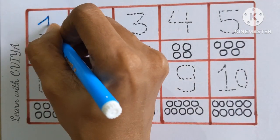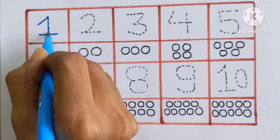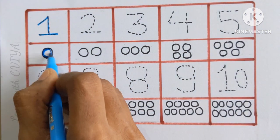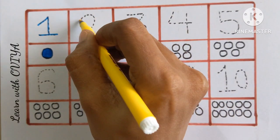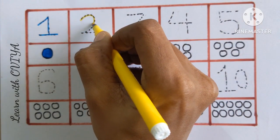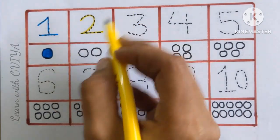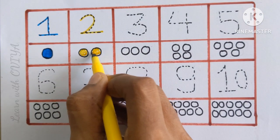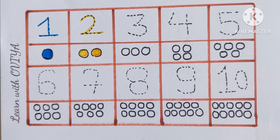At first, number 1 with a sky blue color. Let's color the ball. Number 1 with a sky blue color. Number 2 with a yellow color. Let's color two balls. Number 2 with a yellow color.